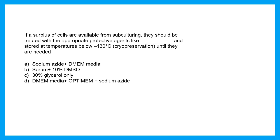If a surplus of cells are available from subculturing, they should be treated with appropriate protective agents like DASH and stored at temperatures below minus 130 degrees Centigrade. It's called cryopreservation until they are needed. So what type of agent can protect? Simply they have asked about cryoprotective agents.